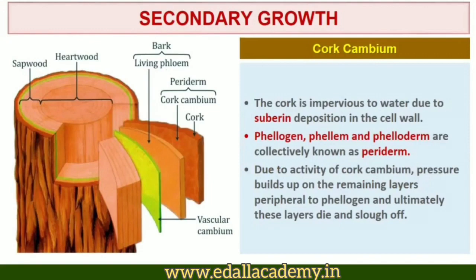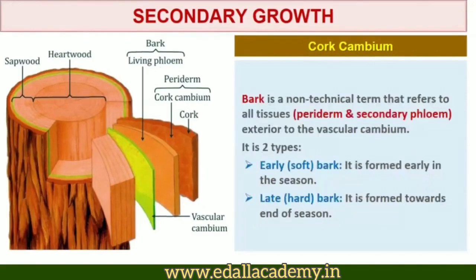Due to the activity of cork cambium, pressure builds up on the remaining layers peripheral to phellogen, and ultimately these layers die and slough off. Bark is a non-technical term that refers to all tissues exterior to the vascular cambium, therefore including secondary phloem. Bark refers to a number of tissue types, namely periderm and secondary phloem. Bark formed early in the season is called early or soft bark.